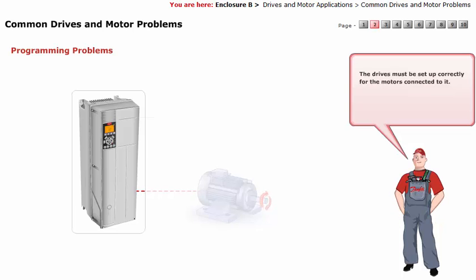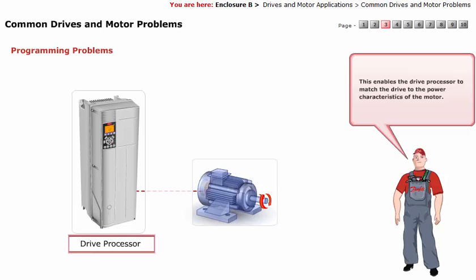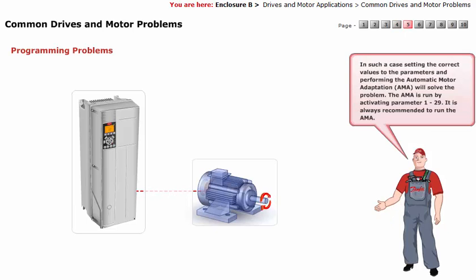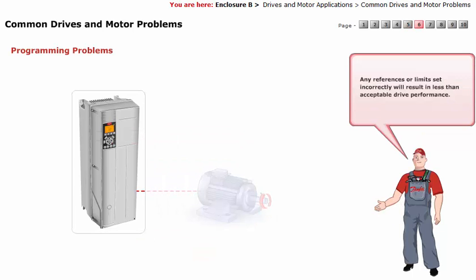The drives must be set up correctly for the motors connected to it. Parameters 1-20 to 1-25 must have the motor nameplate data entered into the drive. This enables the drive processor to match the drive to the power characteristics of the motor. The most common result of inaccurate motor data is the motor drawing a higher than normal amount of current to perform the task expected of it. In such a case, setting the correct values to the parameters and performing the Automatic Motor Adaptation (AMA) will solve the problem. The AMA is run by activating parameter 1-29. It is always recommended to run the AMA. Any references or limits set incorrectly will result in less than acceptable drive performance.